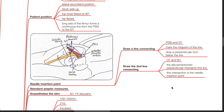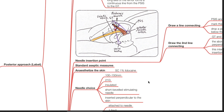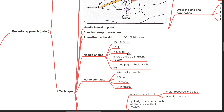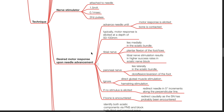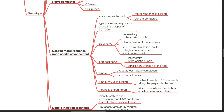Use standard aseptic measures and anesthetize the skin with subcutaneous lidocaine. Needle of choice: 100–150 mm, 21-gauge insulated short bevel stimulating needle inserted perpendicular to the skin, with a nerve stimulator set at 1.5 mA, 0.1 ms, 2 Hz pulses. Advance the needle until motor response is elicited or bone is contacted — typically at a depth of 50–100 mm. The tibial nerve lies medially in the sciatic bundle; plantar flexion of the foot and toes occurs with tibial nerve stimulation, which results in higher success rates.